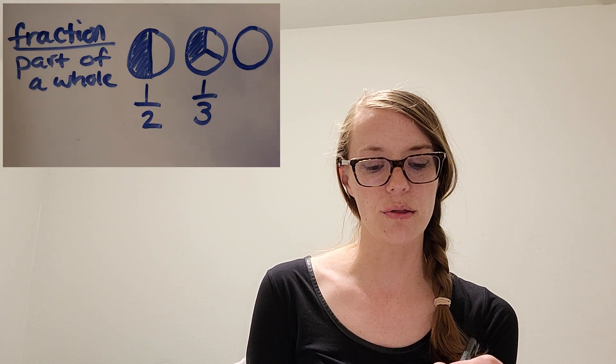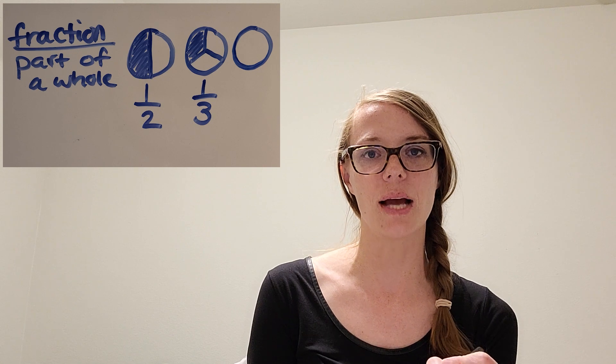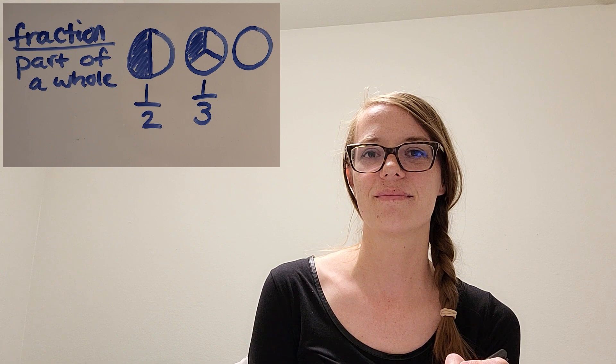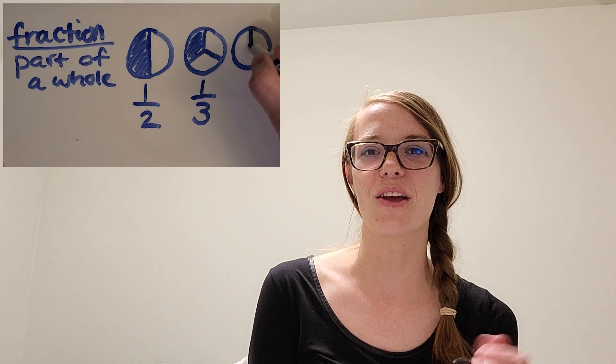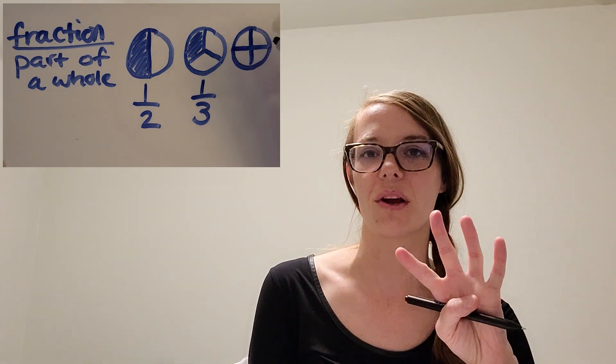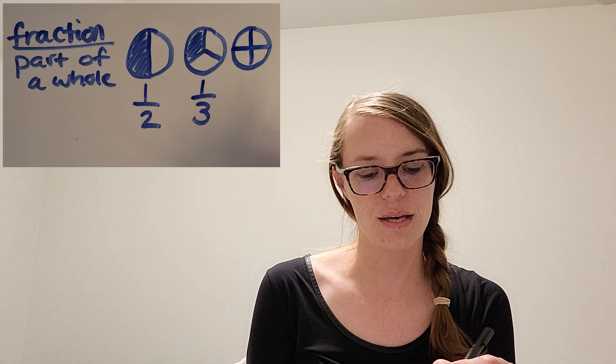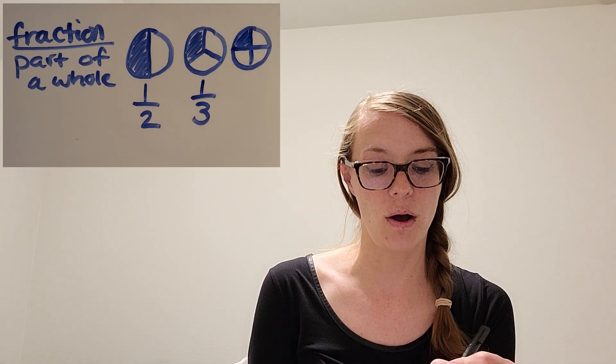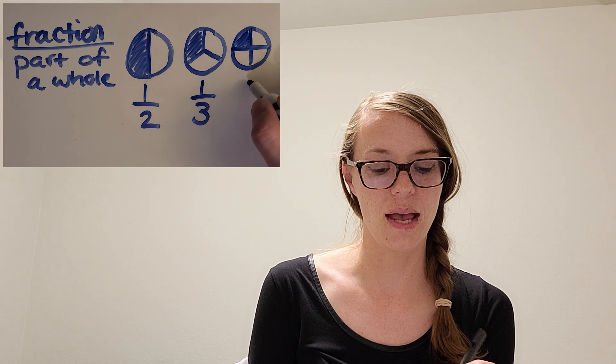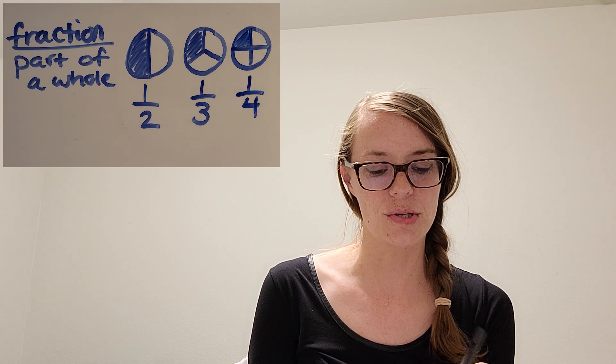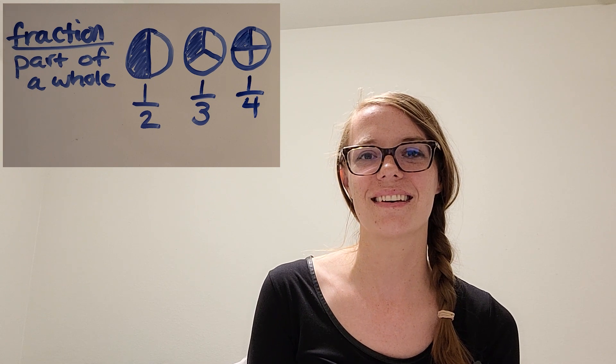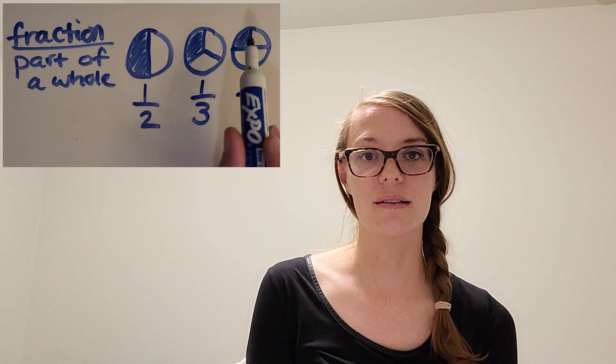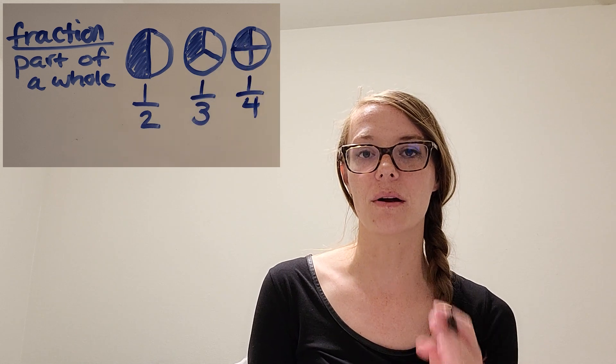Let's draw one-fourth and see what happens. So one-fourth, again, I'm drawing the same size circle as before. How many pieces should I draw? Awesome, you got it! Four pieces since it's fourths. So here's my four pieces. I'm going to shade in one. And what do you notice to the size of the piece? Okay, awesome! It is getting smaller and smaller.